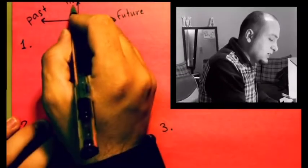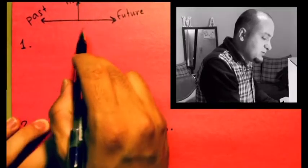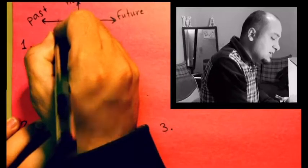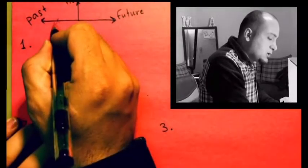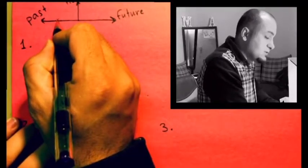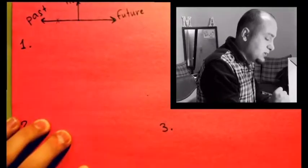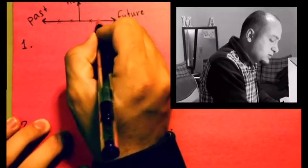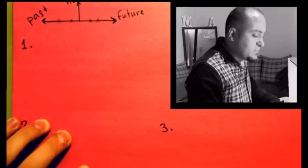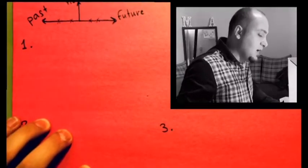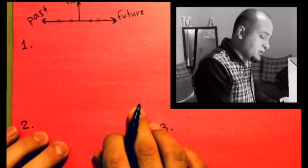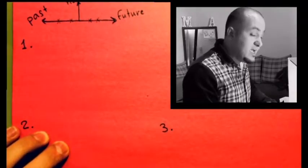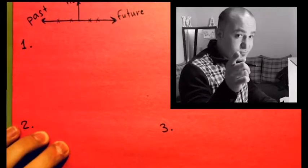That's it. So, let's pretend again, as I told you, this is past, this is now, and this is future. Now, when I draw something like this, this means I'm talking about an action. This is an action. This is another action. Now, I'm gonna draw another diagram for the first tense we're gonna talk about, and I want you to guess what it is.